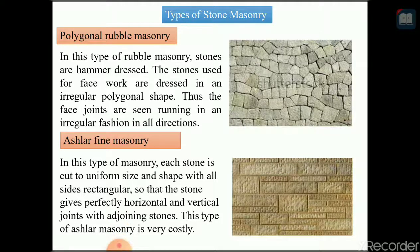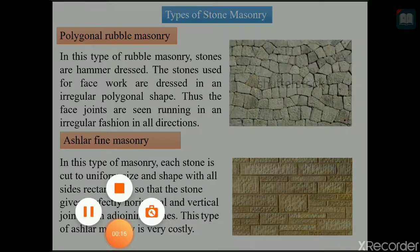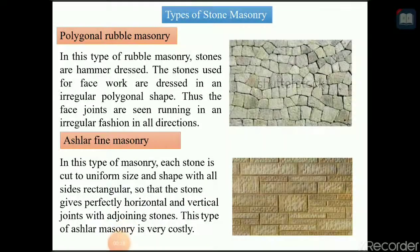The last type of rubble masonry is polygonal rubble masonry. In this type, the stones are hammer dressed. The stones used for the face work are dressed in an irregular polygonal shape, and the face joints are seen running in an irregular fashion in all directions — that is why it is called polygonal rubble masonry.